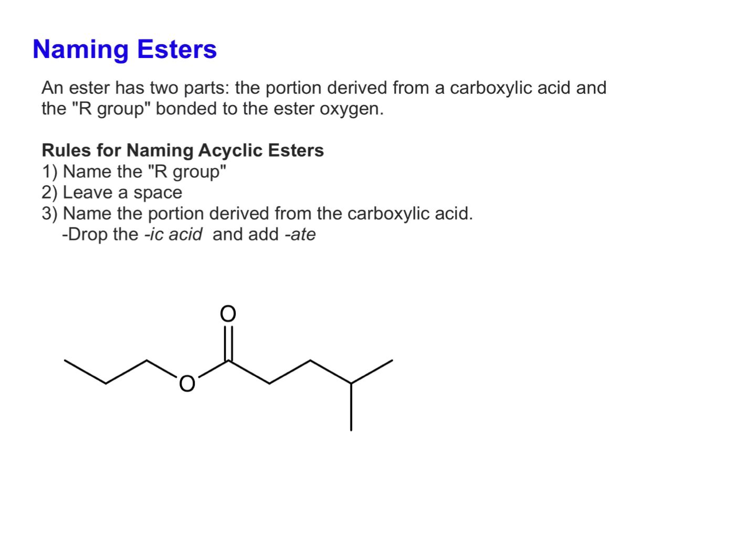If you already understand how to name carboxylic acids, it's pretty straightforward how to name esters. The first thing we're going to do, step one, is name this R group that's attached to the oxygen. Then you leave a space. And then we name the portion that's derived from the carboxylic acid. Now if it were a carboxylic acid, it would have the IC ending. But since it's an ester, we change that ending to ATE. We drop the IC and add ATE.